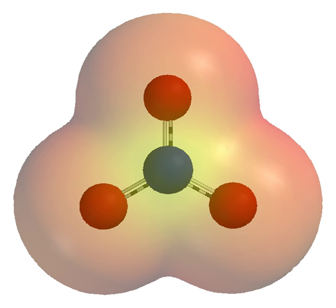A zwitterion is a neutral molecule with positive and negative charges at different locations within that molecule. Cations and anions are measured by their ionic radius and they differ in relative size.